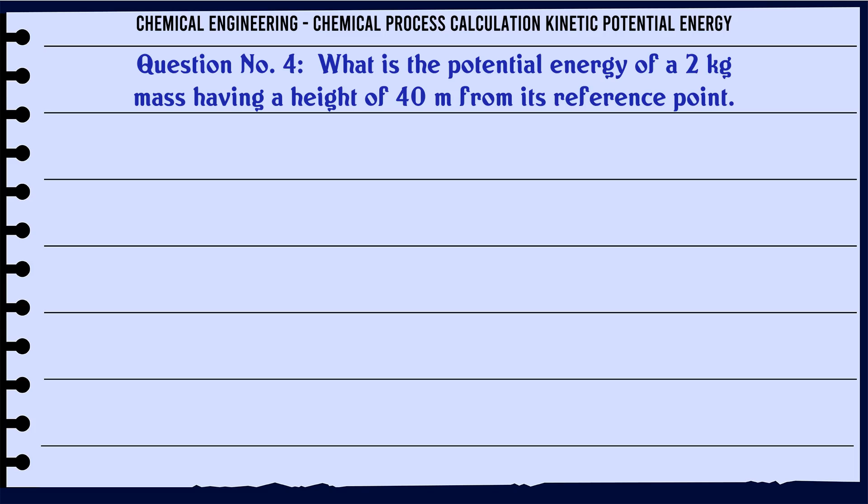What is the potential energy of a 2 kg mass having a height of 40 m from its reference point? A: 287. B: 784. C: 487. D: 847. The correct answer is 294.